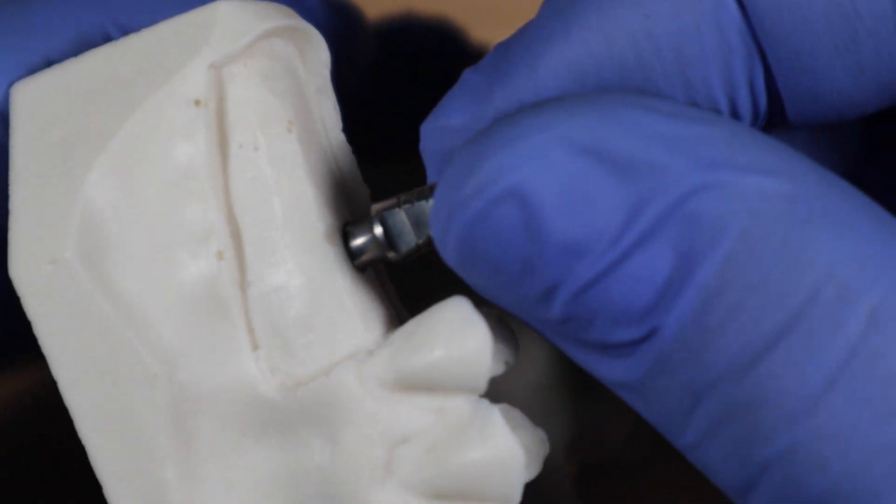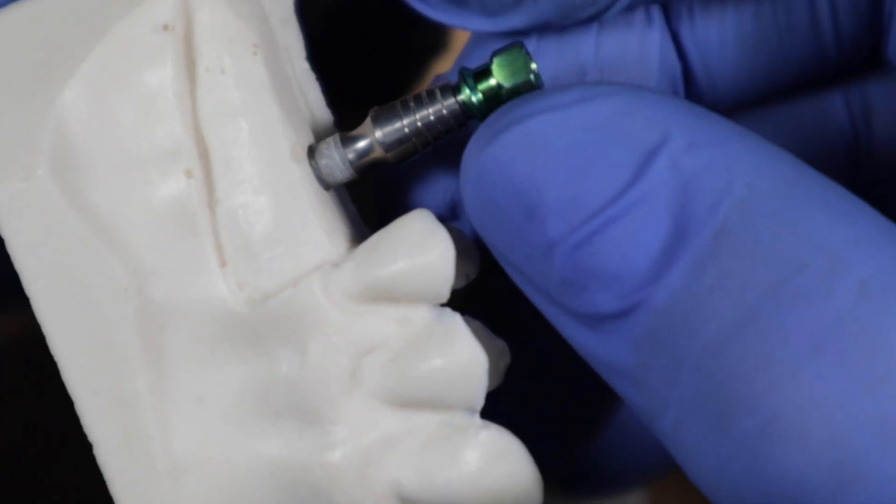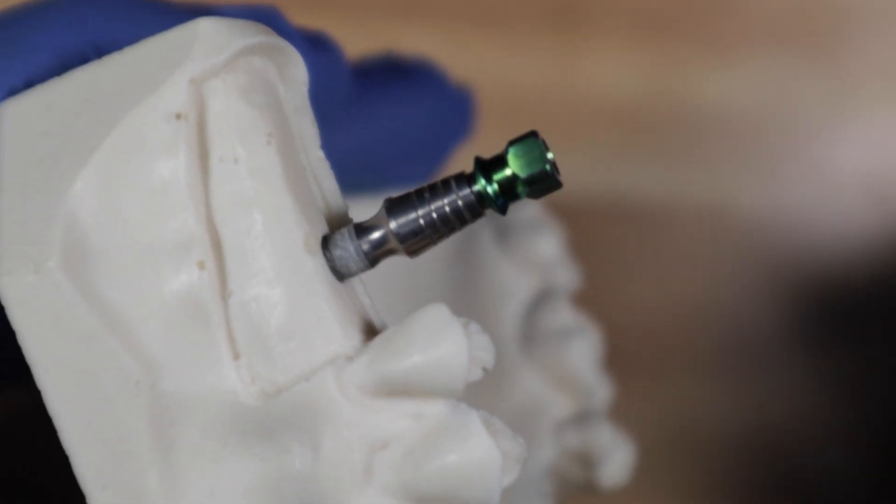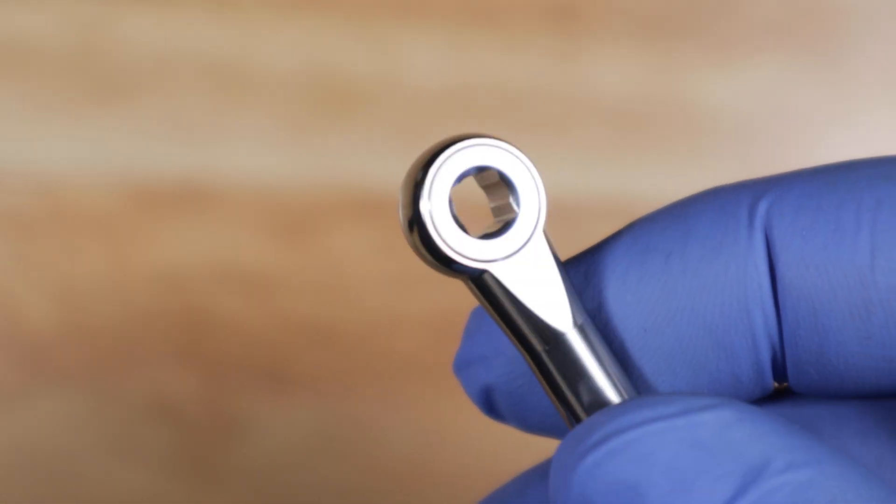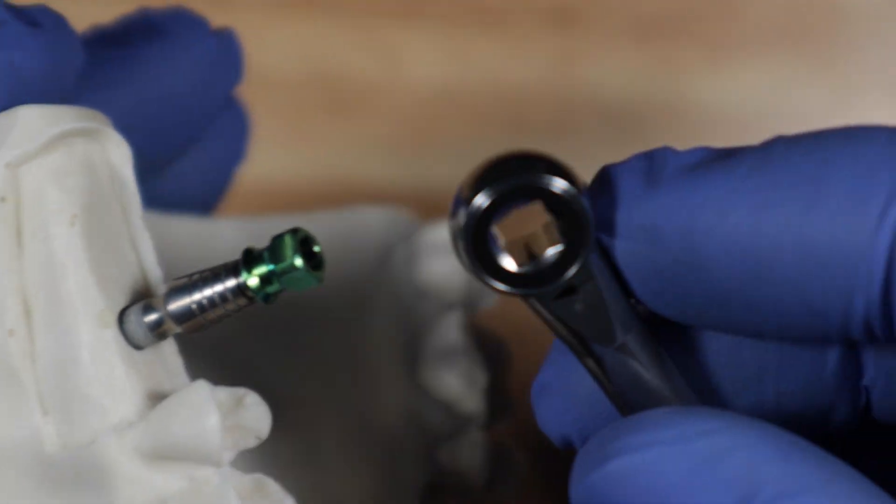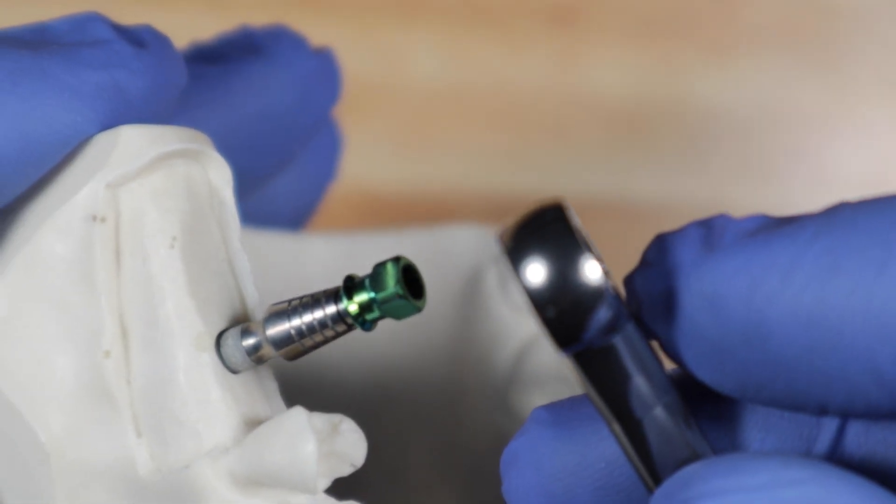And often actually your implant wouldn't have gone all the way down. Your implant will be like right there. And then you just take your torque wrench, this guy right here with the arrow visible, and then you put your torque wrench on there and take it the rest of the way.